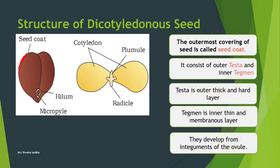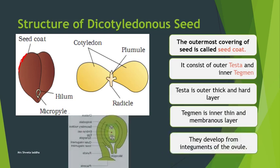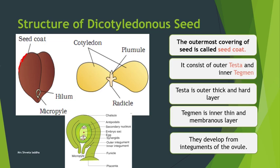How are testa and tegmen formed? They are basically developed from the integuments of the ovule. In the anatropous ovule, there are two integuments - the outer integument and the inner integument. After fertilization, the egg fertilizes with the first male gamete and the embryo forms; the secondary nucleus fertilizes to form the endosperm, and these integuments form the seed coats. The outer integument forms testa and the inner integument forms tegmen.